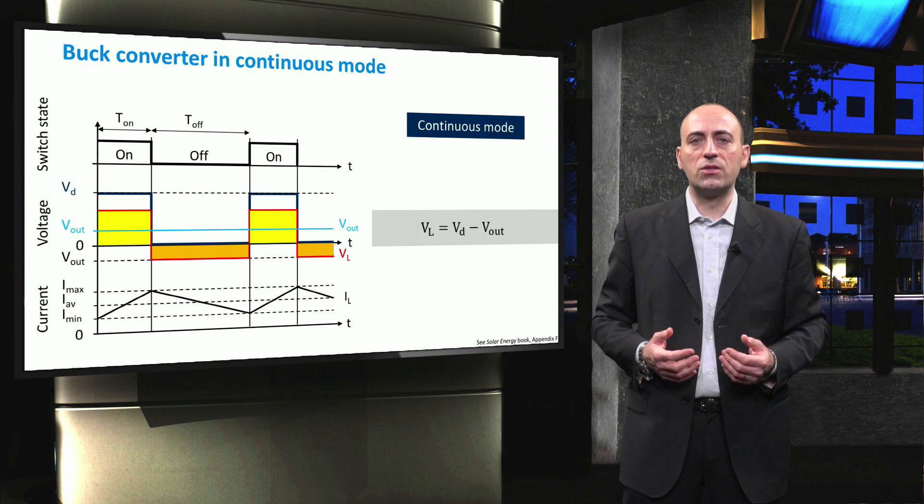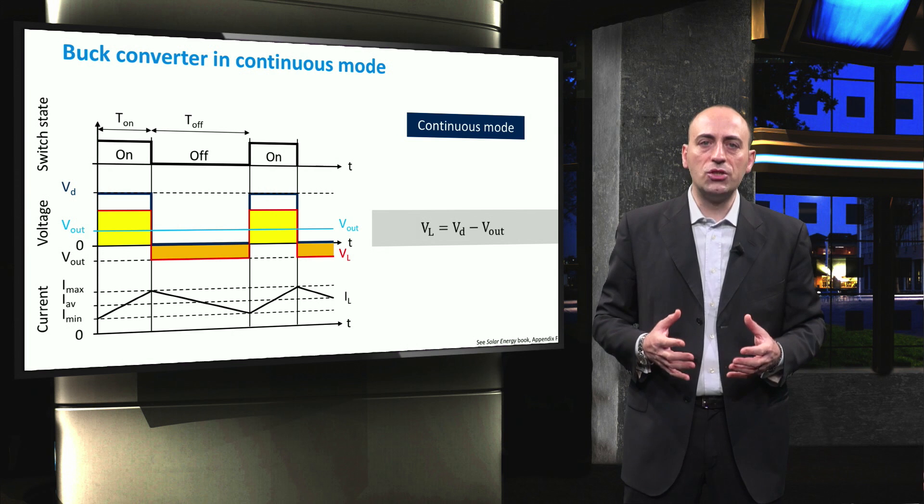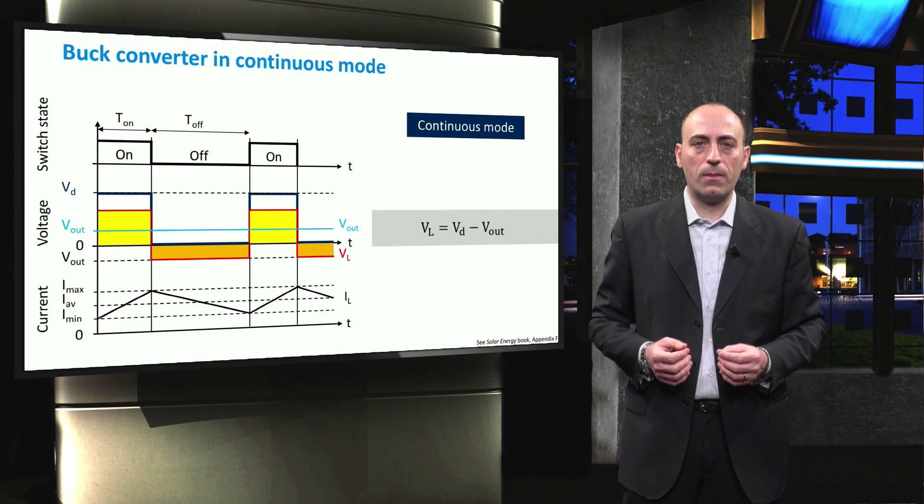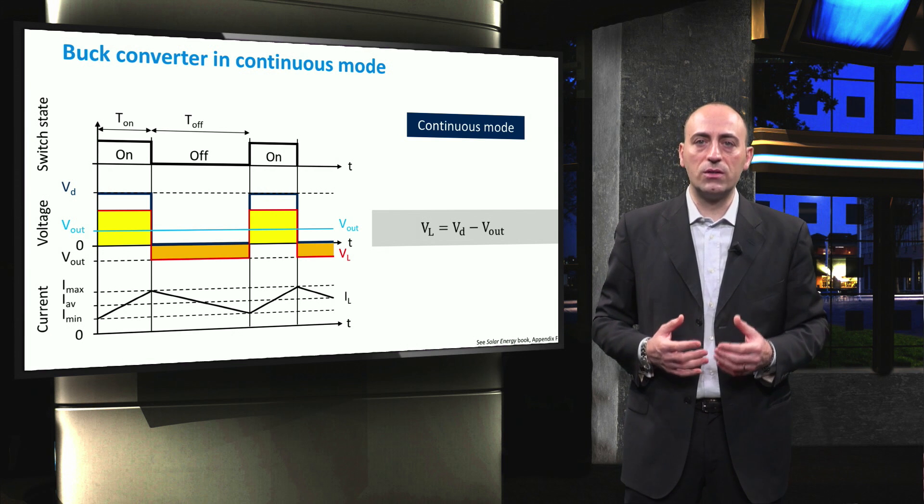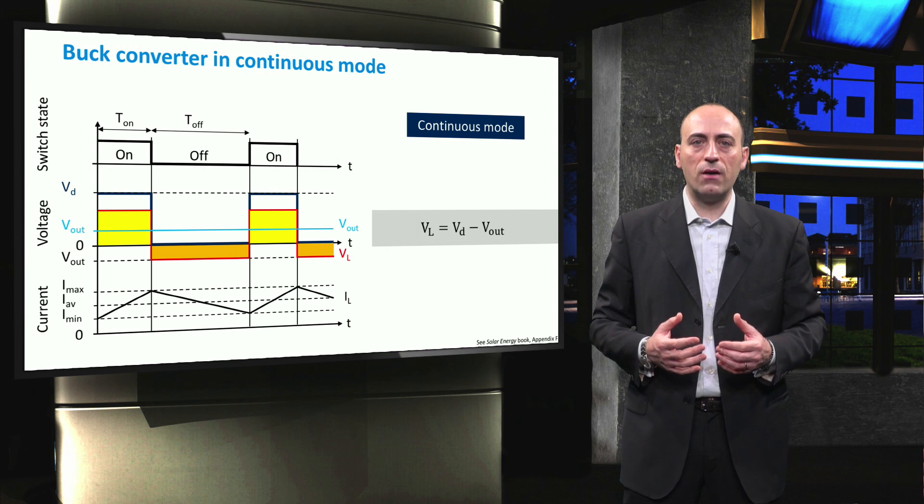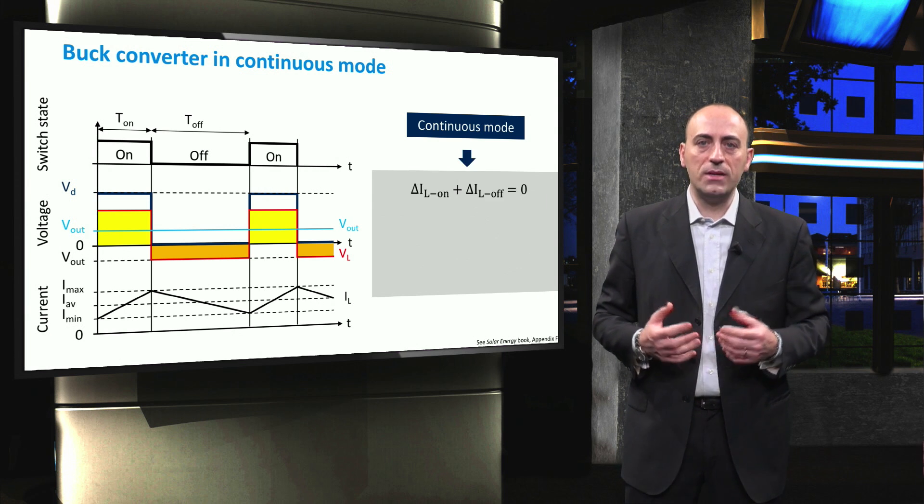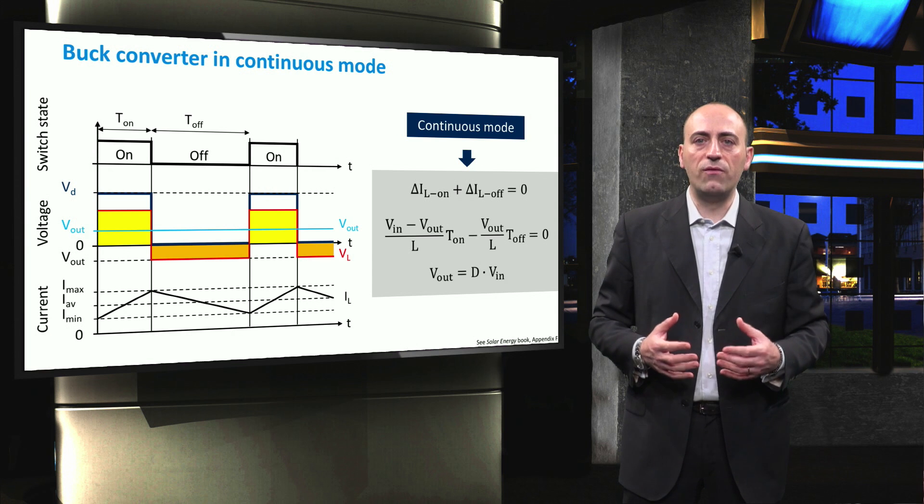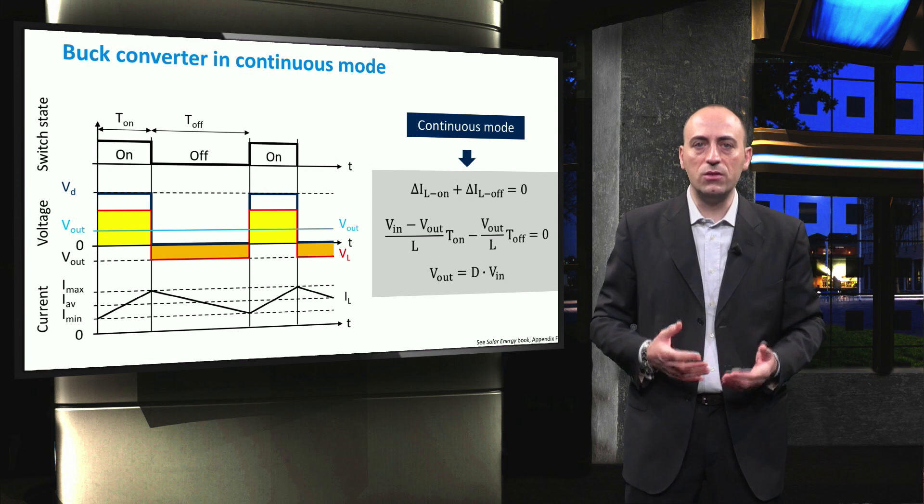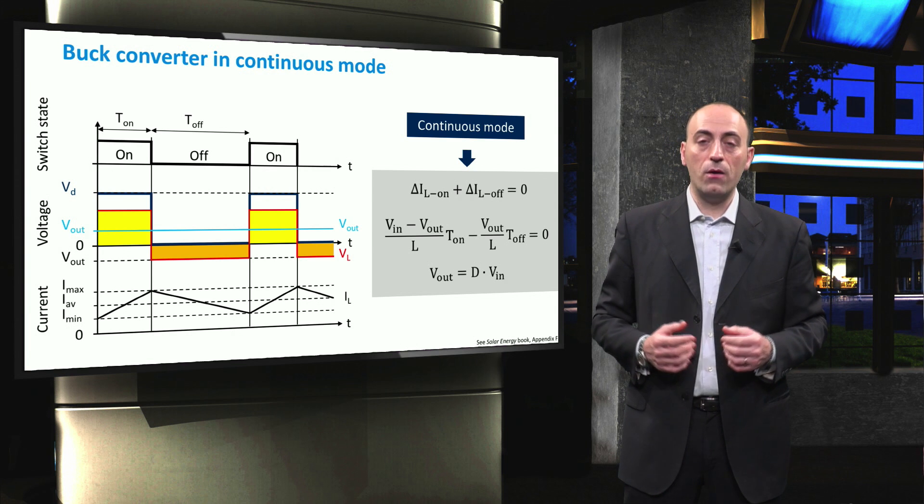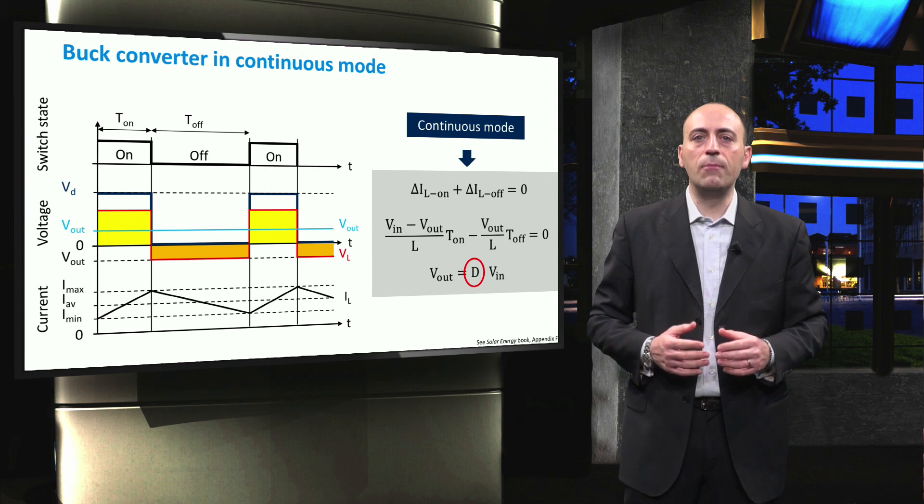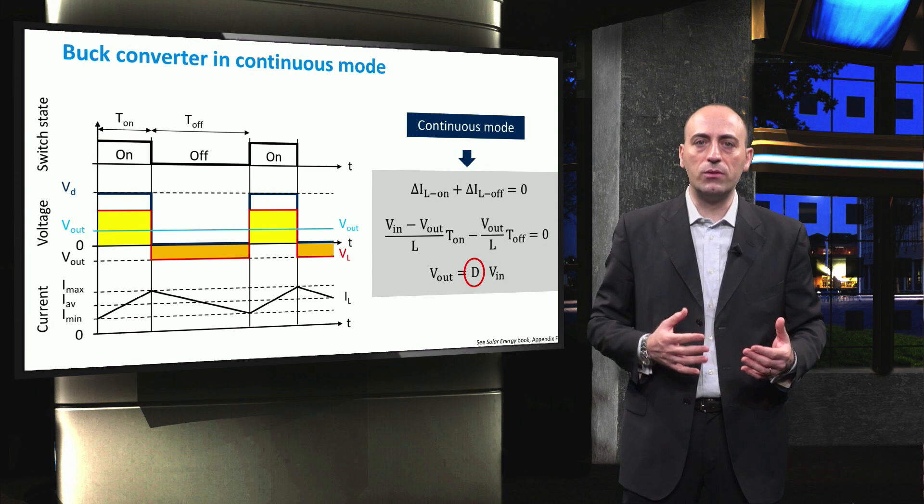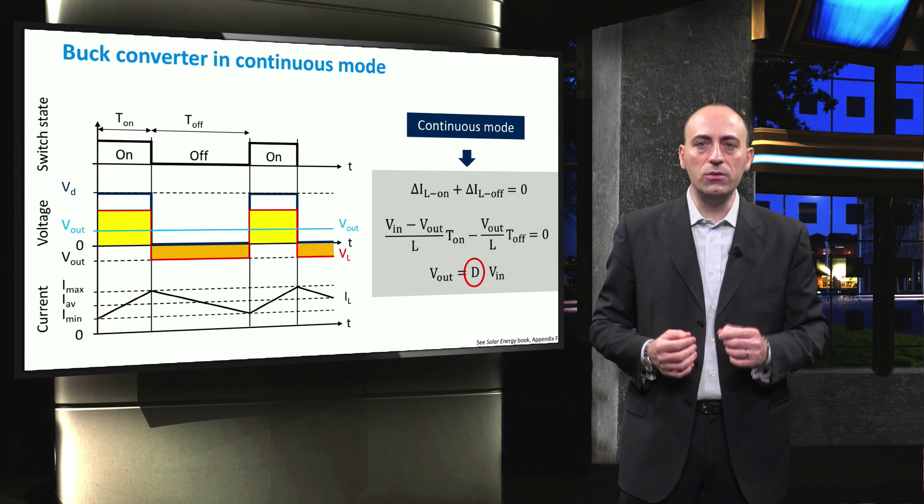After a certain number of cycles, when the converter reaches the steady state, the average current flowing through the capacitor and the average voltage across the inductor are zero. This means that the average current through the coil is constant, and that the net change in the inductor current after one cycle must be zero. By simply substituting what we found in the previous slides, we obtain this equation. Once worked out, we find out that the output voltage can be written as the duty cycle times the input voltage. Remember that by definition, the duty cycle D can be anything between zero and one, so we can change the ratio between the voltages on the input and output sides of the DC-DC converter only by changing the duty cycle.